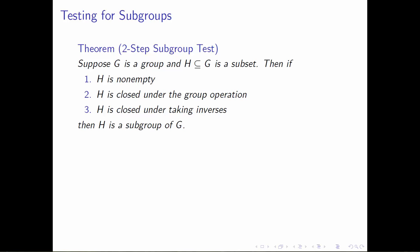Suppose that G is a group and H is a subset of G. Then H will form a subgroup of G if the following three things are satisfied: first, H is not empty; second, H is closed under the group operation of G; and third, H is closed under taking inverses. If these three things are satisfied, then the subset H will actually be a subgroup of G.